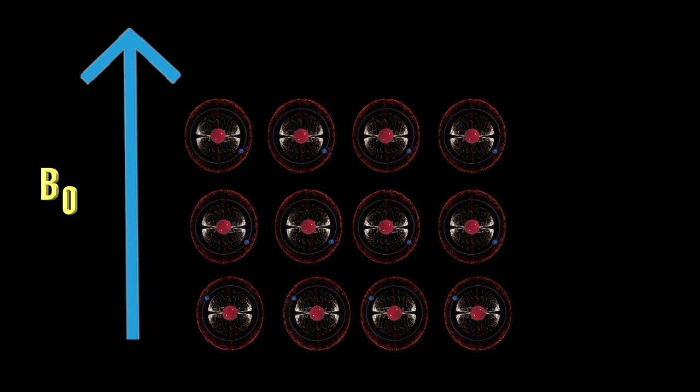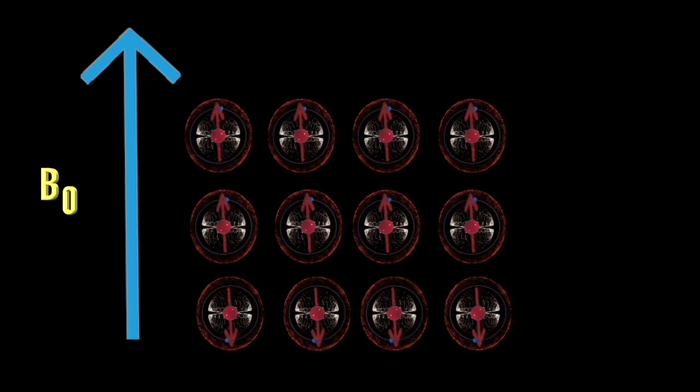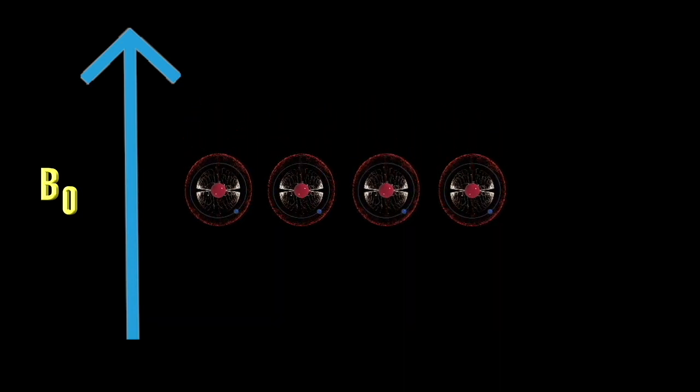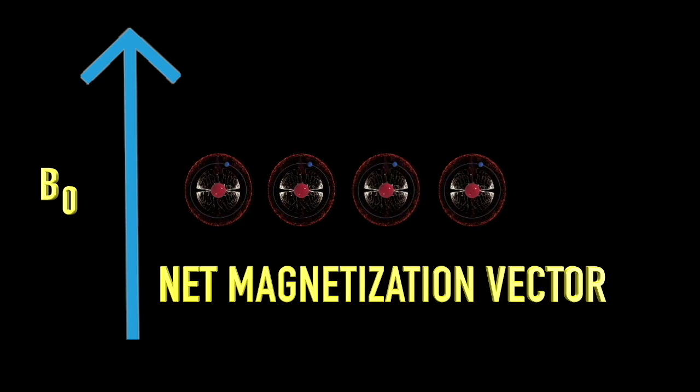The larger number of low energy nuclei cancel out the high energy nuclei, leaving an excess number of parallel nuclei remaining. This is called the net magnetization vector.